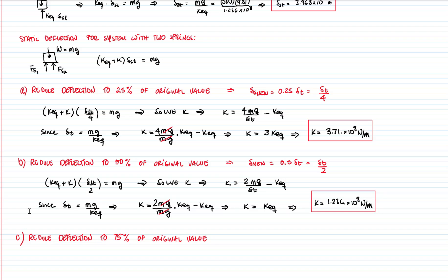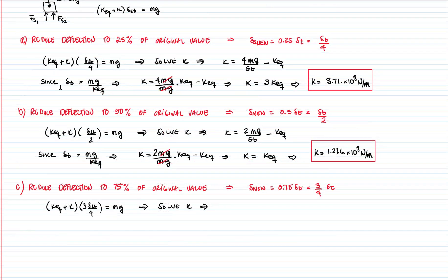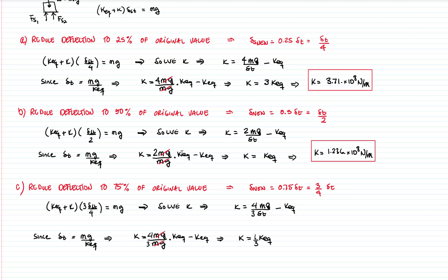In the last part of this problem, we are asked to reduce the deflection to 75% of the original value. That means the new static deflection must be 0.75 times the original, which is 3/4 of the static deflection. Using the same equations as before and solving for k, we get 4 times mass times gravity divided by 3 times the original deflection, minus the equivalent beam spring constant. Simplifying gives a spring constant of one-third of the original equivalent beam constant, which is 4.12 times 10 to the 7 Newtons per meter.